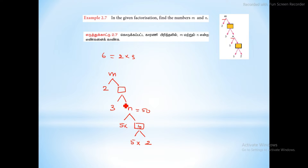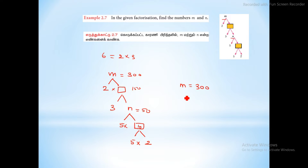50 into 3 is 150. Finally, m is 150 into 2, so m is equal to 300. N is equal to 50. This is the answer.